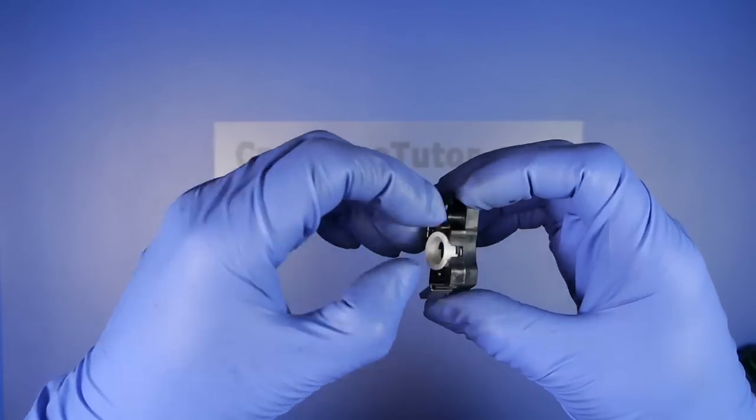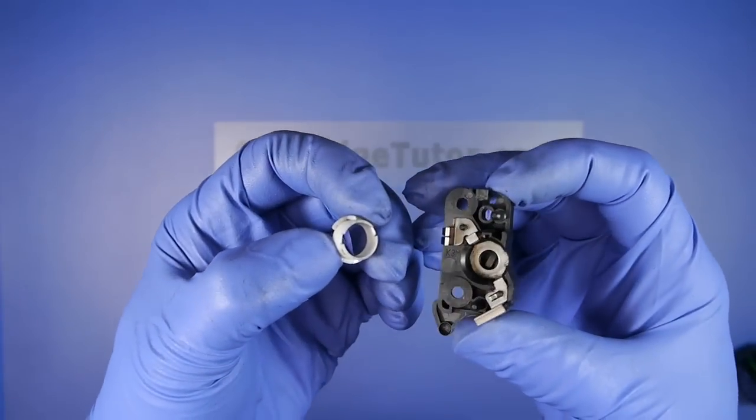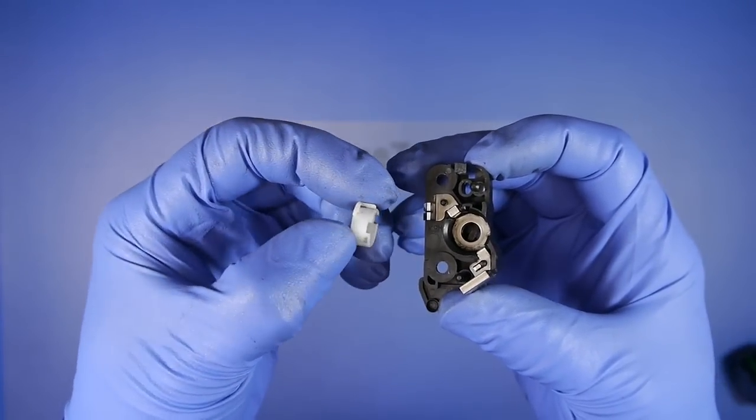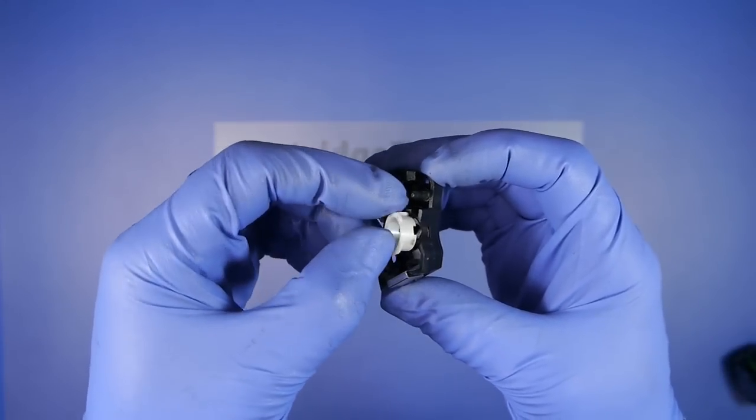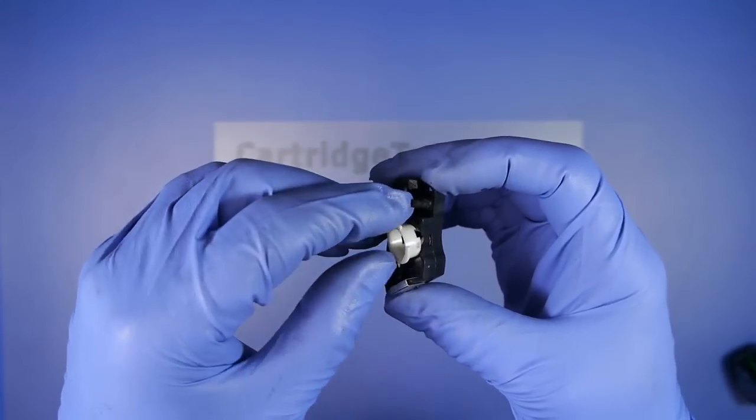You want to recognize the fact that the end plate comes apart like this, and this white bearing has to be installed into the end plate correctly. It is keyed.